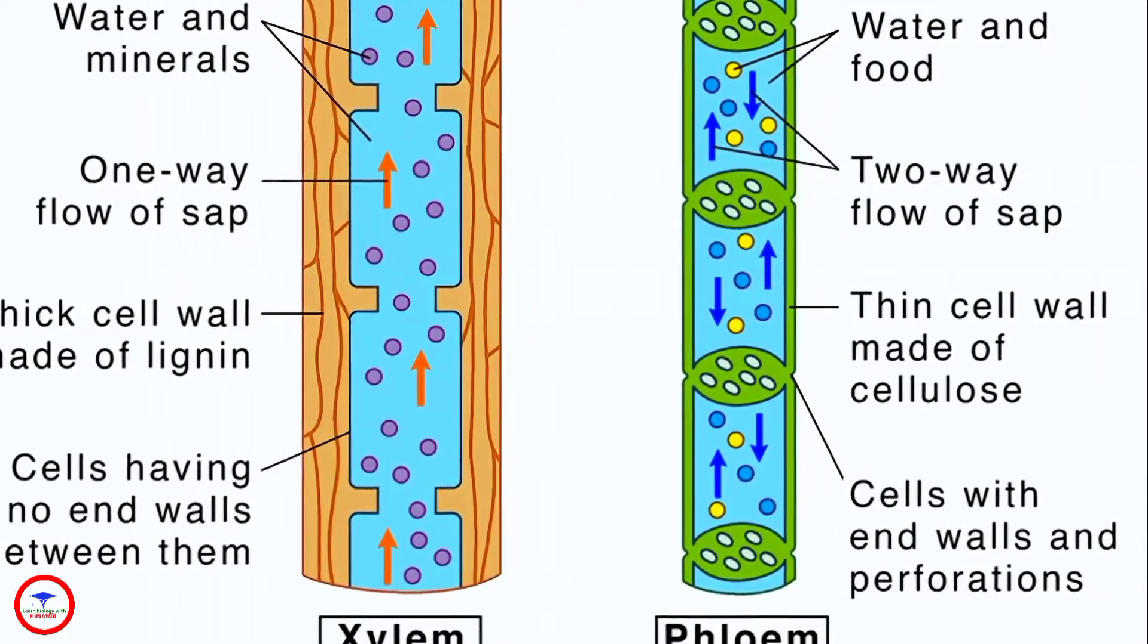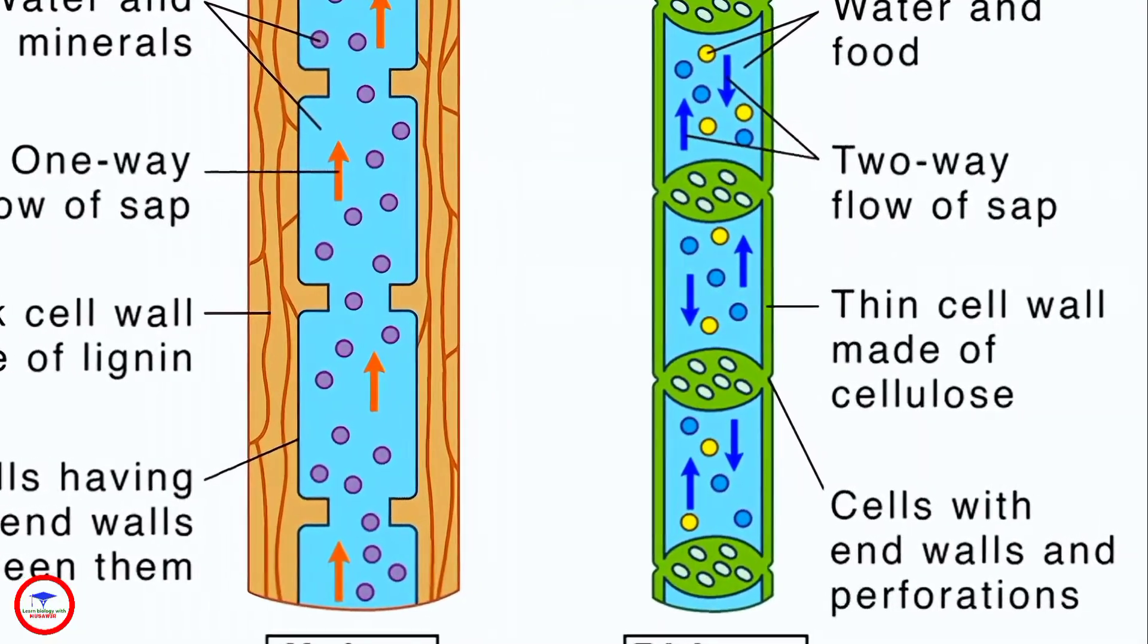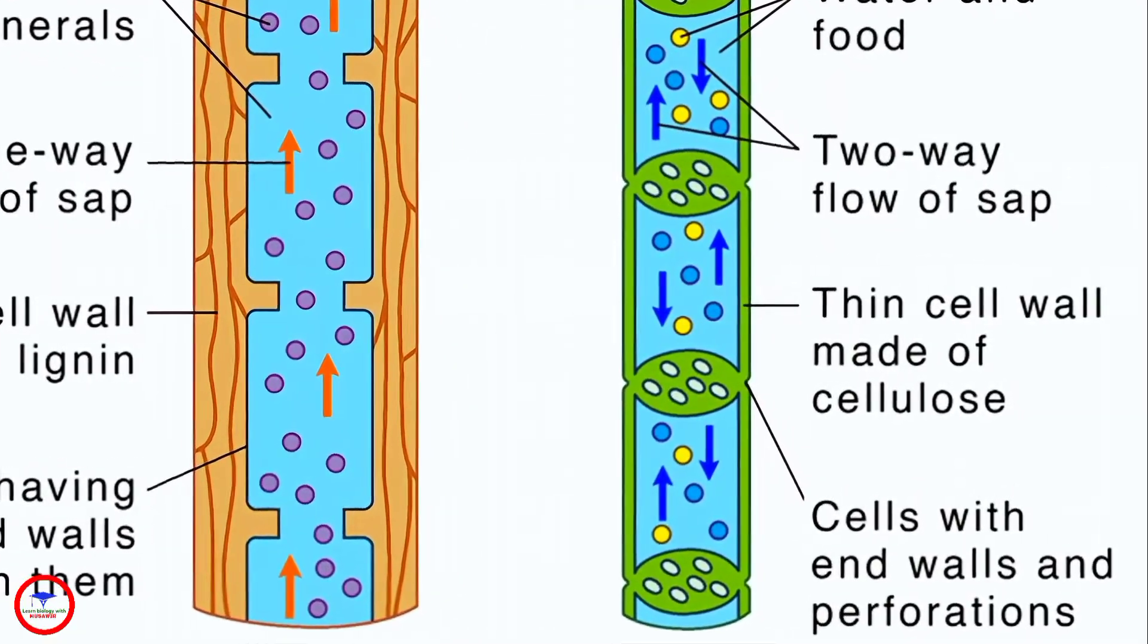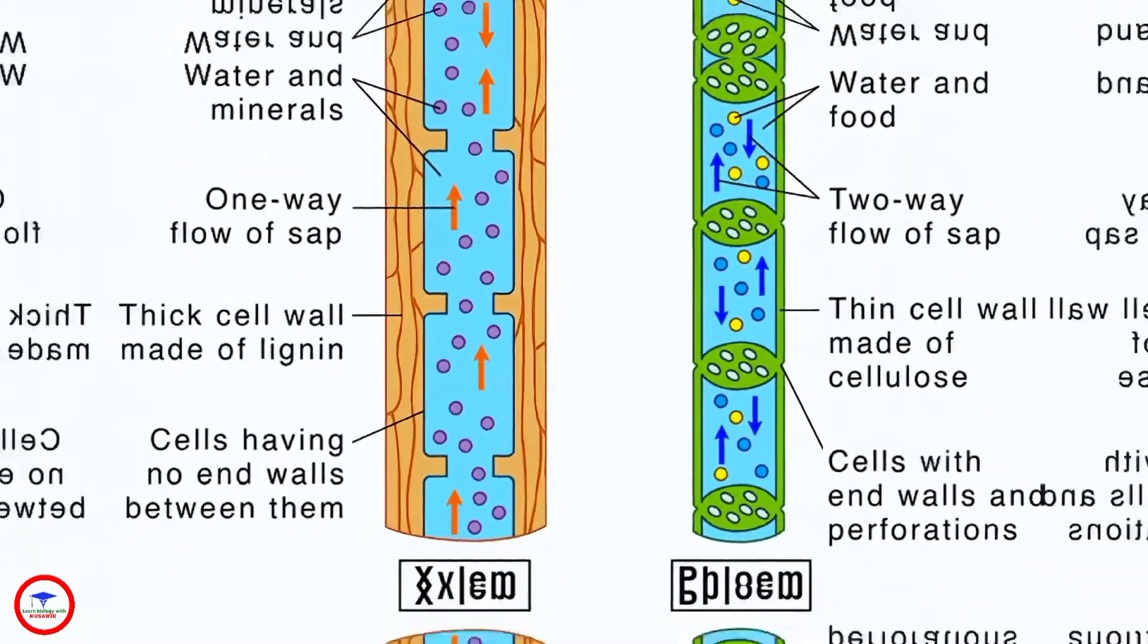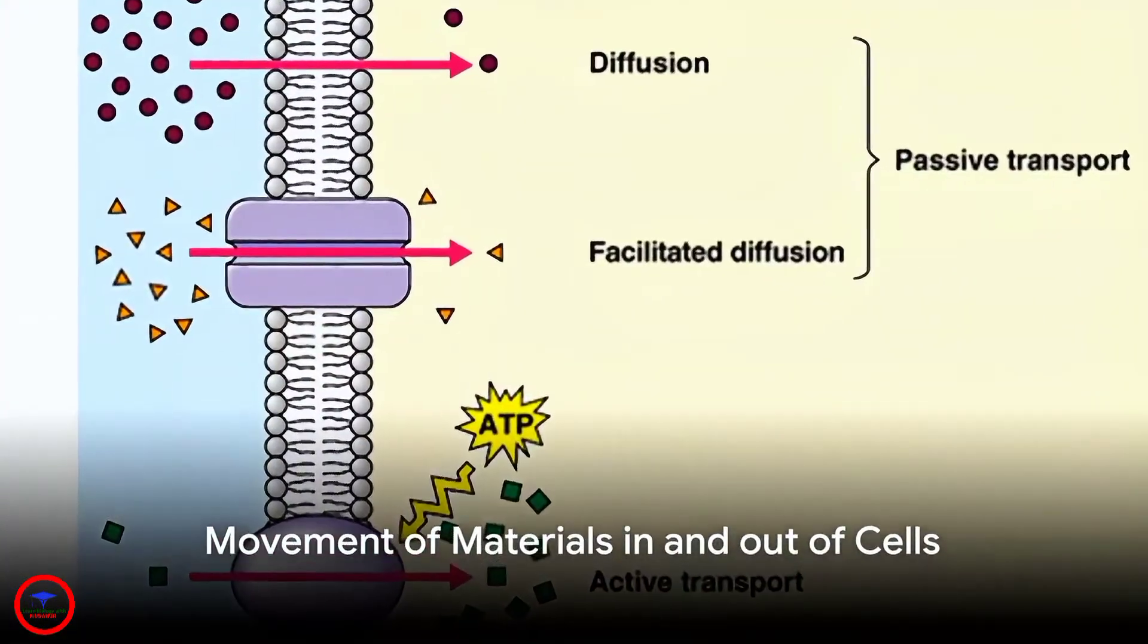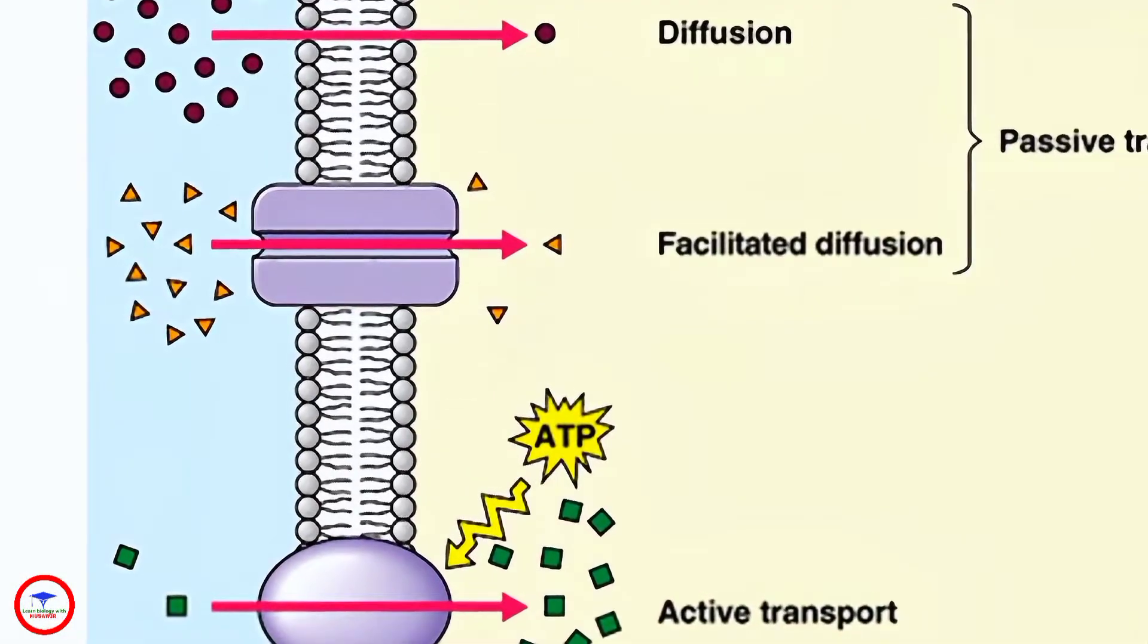The phloem, on the other hand, moves food and other organic materials from leaves to other parts. These two make up the vascular bundle, the plant's highway system. Materials move into, through and out of cells in a variety of ways.